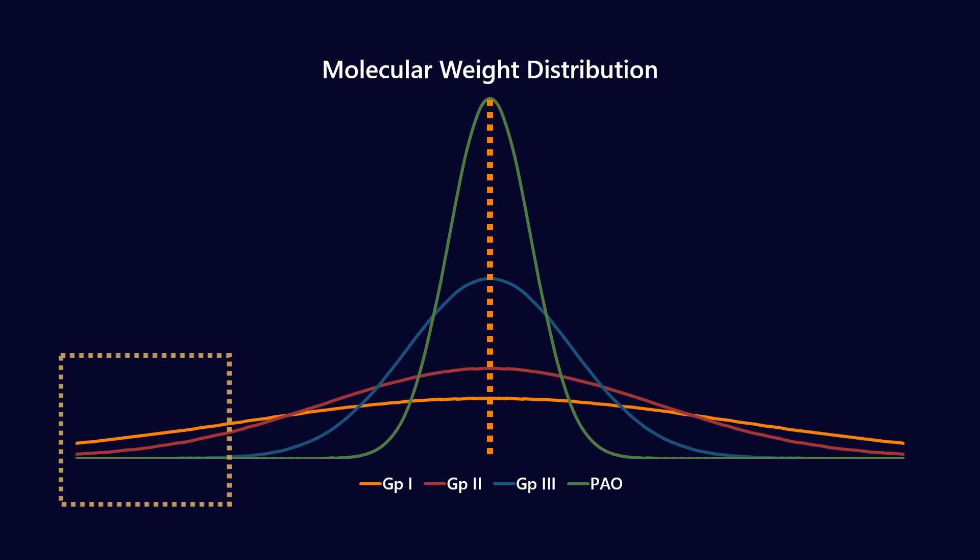So what does that mean for volatility? Well, if you look in the box on the bottom left, the percentage of light molecules in the bulk lubricant is much less for a group three or for a PAO. And what that shows you is that there are more light ends in a group one than there would be in, let's say a PAO. And so you would expect a group one to be more volatile.